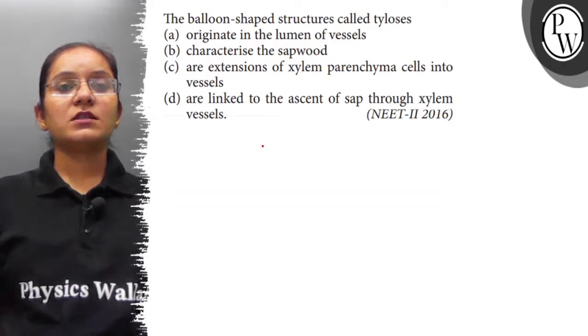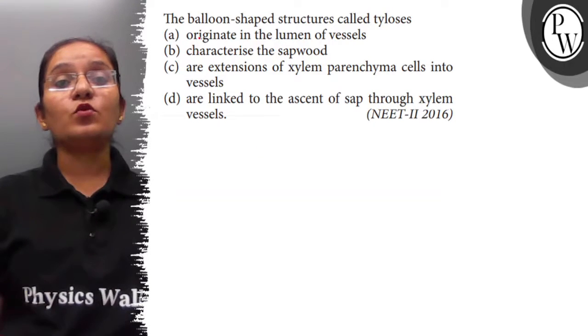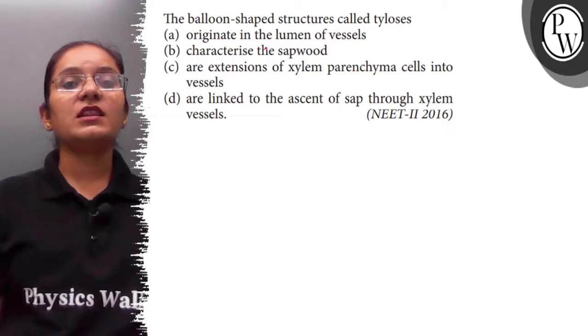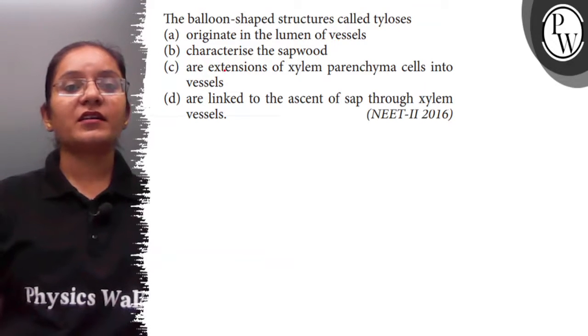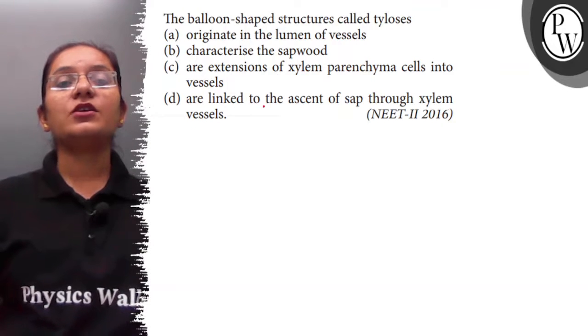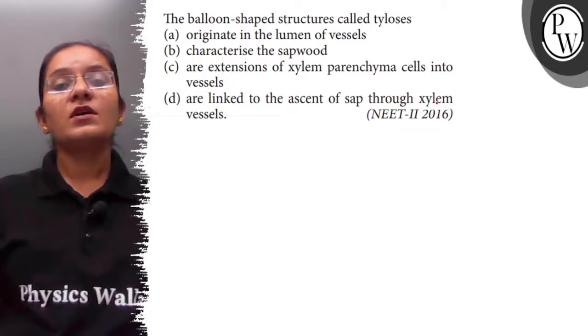Hello students, the question is: balloon-shaped structures called tyloses - (a) originate in the lumen of vessels, (b) characterize the sapwood, (c) are extensions of xylem parenchyma cells into vessels, (d) are linked to the ascent of sap through xylem vessels.